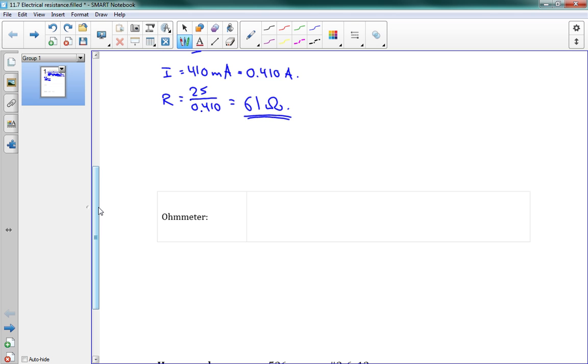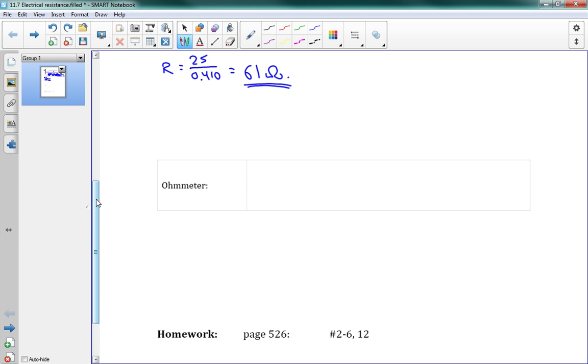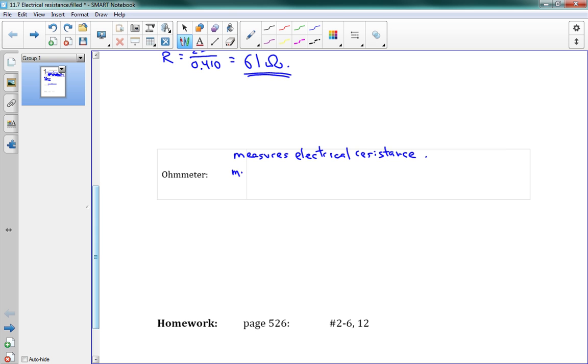The last piece here is an ohmmeter. It's like the ammeter and voltmeter we looked at before. An ohmmeter lets us measure the resistance of an object. It measures electrical resistance and must be connected in parallel, just like the voltmeter.